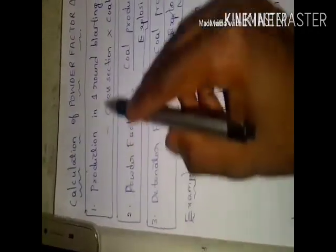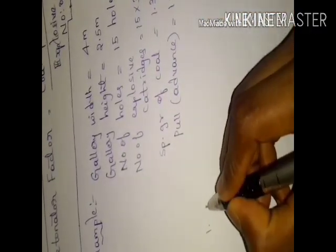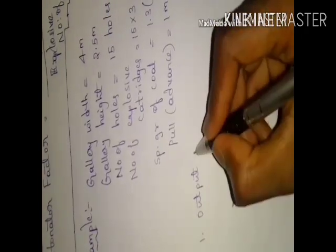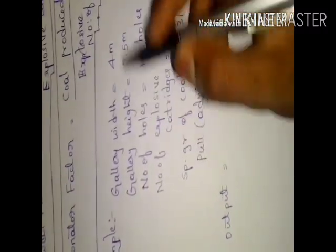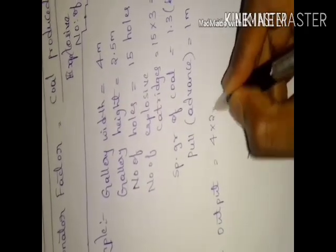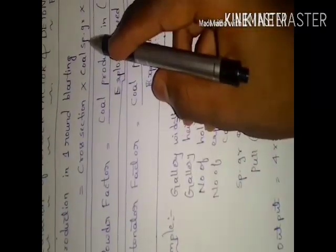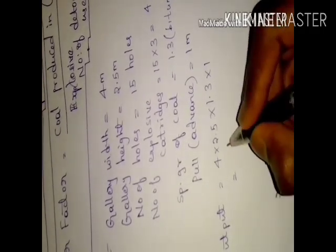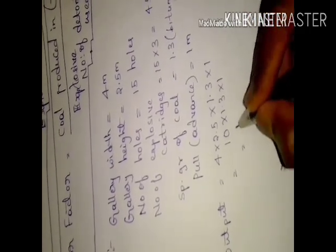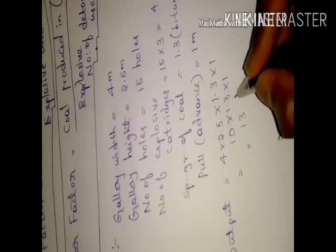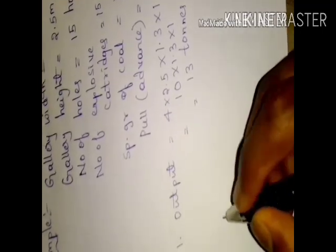Part 1 — Production in one round of blast (output): equals cross-section multiplied by specific gravity of coal multiplied by pull. Cross-section equals gallery width × gallery height = 4 meters × 2.5 meters = 10. Then 10 × specific gravity 1.3 × pull 1 meter = 13 tons. So we have achieved 13 tons of coal produced in one round of blast.